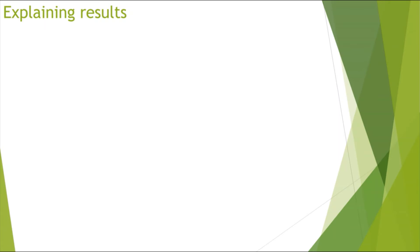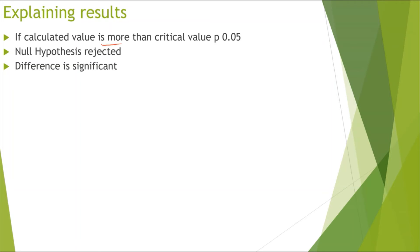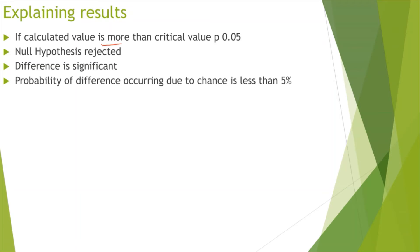How do we explain results? If the calculated value is more than the critical value — at 5% chance — then we can reject the null hypothesis. This means that the difference that's occurred in the results is significant, and the probability of the difference occurring due to chance is less than 5%. There is a very high chance that the differences occurred because of a significant result, not just due to chance.